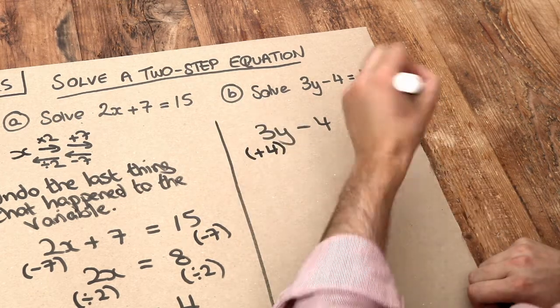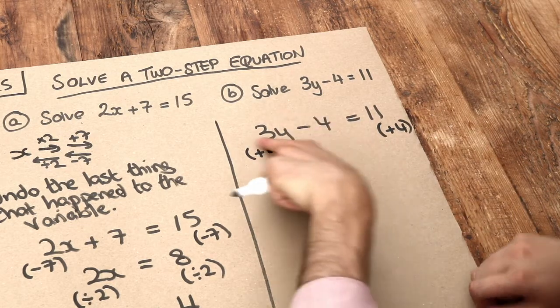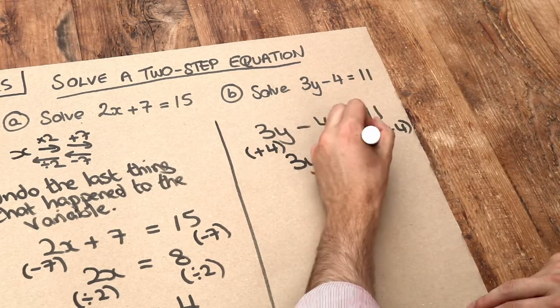If we add 4 to the left-hand side, we have to add 4 to the right-hand side. Adding 4 to the left-hand side gets rid of the minus 4, leaving 3y. Adding 4 to 11 gives you 15.